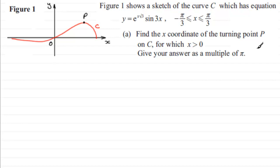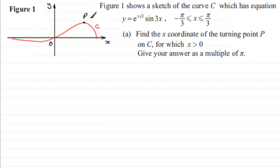In figure one it shows the sketch of the curve C with equation y equals e to the power x root 3, multiplied by sine of 3x, where x is given in radians, greater than or equal to minus π/3 radians but less than or equal to π/3 radians. We need to find the x-coordinate of the turning point P on this curve C for which x is greater than zero.